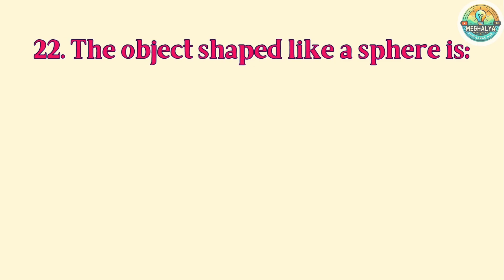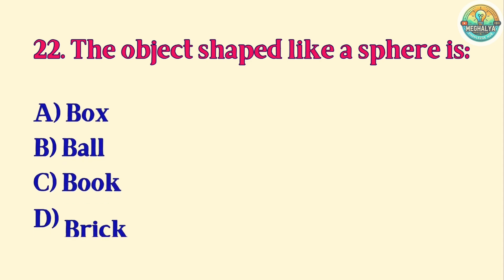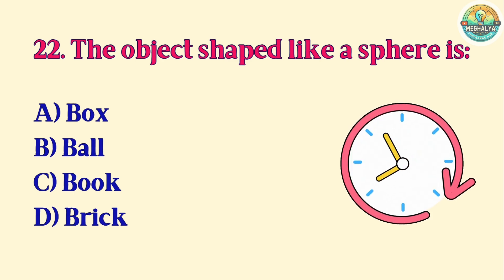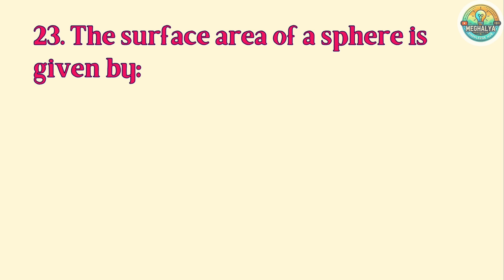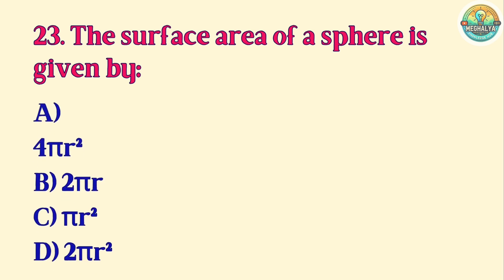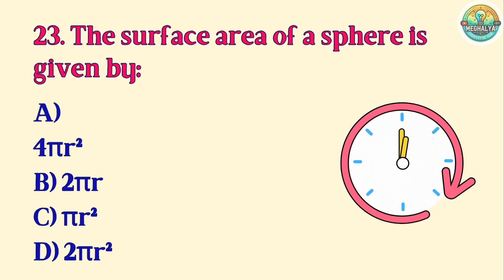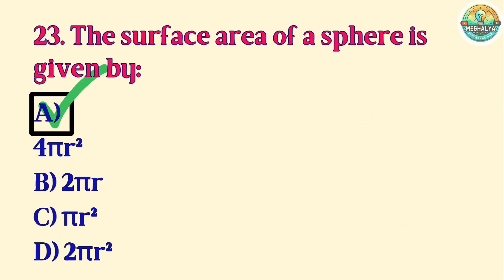Question 22. The object shaped like a sphere is: A. Box. B. Ball. C. Book. D. Brick. Correct answer is B. Ball. Question 23. The surface area of a sphere is given by: A. 4πr². B. 2πr. C. πr². D. 2πr². Correct answer is A. 4πr².